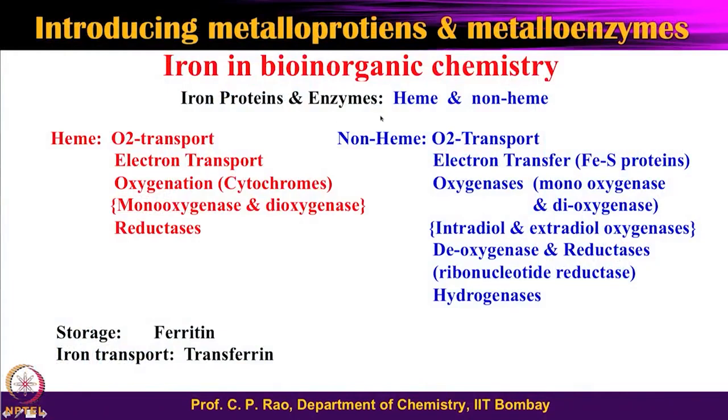Now let us smoothly get into the next topic — iron in biological inorganic chemistry. We may be taking a bit longer here because the iron case is quite large; there are a huge number of enzymes in biological systems, both heme-based and non-heme. Therefore, we will be spending several more lectures on iron biological inorganic chemistry. Iron is very special because there is something called heme, which I have already introduced, and then we have non-heme too.